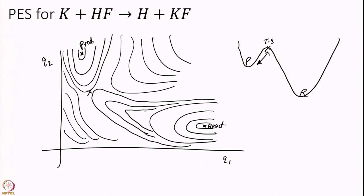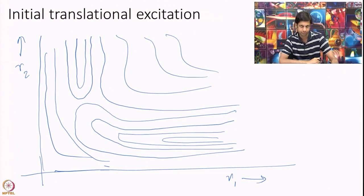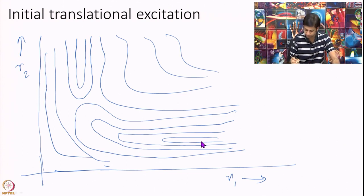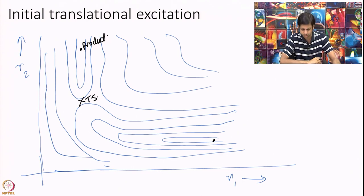This is how the combined surface looks: the reactant contours turn around toward the product channel. This turn is extremely important. I have drawn it so that the reactant region has a minimum here, the transition state is a saddle point here, and the product region is over here. Now let us start thinking about dynamics on this energy surface — really thinking of marbles rolling on it.